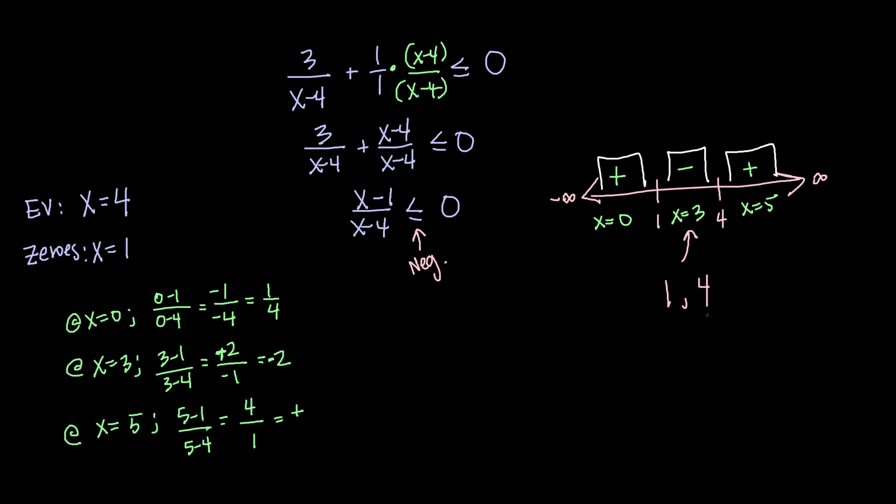Looking to see which of those can be included since we do have the equal to, we want to make sure that we include our zeros but that we exclude our excluded values. So one will be included by enclosing with a bracket and four will be excluded by closing with a parenthesis. So our solution to this rational inequality is one to four.